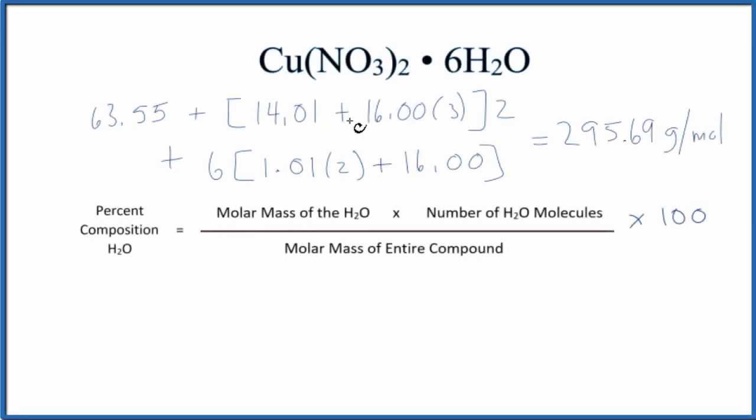In this video, we'll find the percent composition by mass of the water in Cu(NO3)2·6H2O. This is copper 2 nitrate hexahydrate.